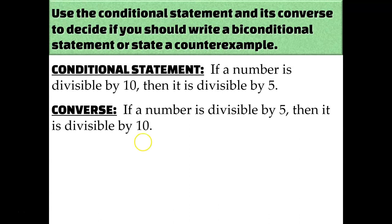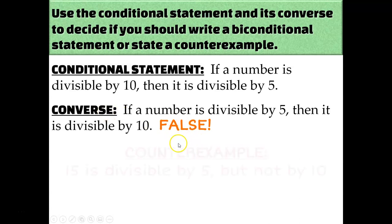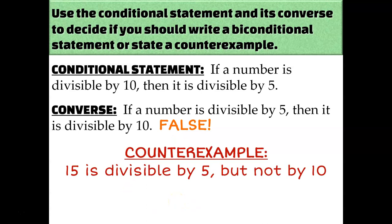Could you come up with a counterexample — a number divisible by 5 but not by 10? What about 15? 15 divided by 5 is 3, but 15 divided by 10 doesn't give an integer answer. So the converse is false, and 15 is our counterexample. Or 45, 75, or 5 — any number divisible by 5 but not by 10. You don't even have to write a full sentence; just saying '15' is enough to show the converse is not always true.